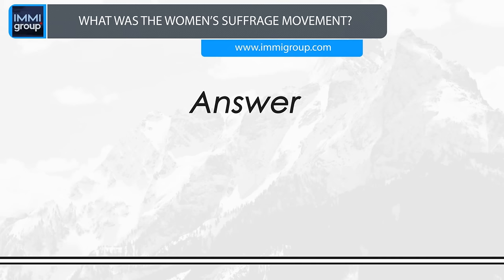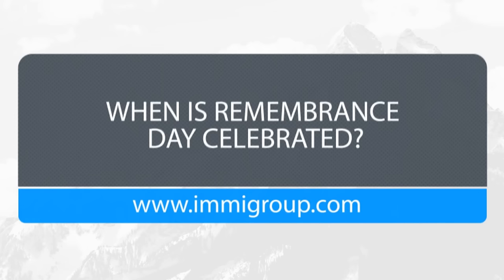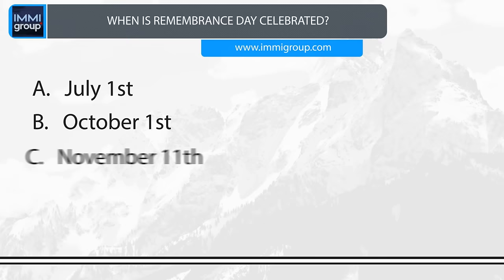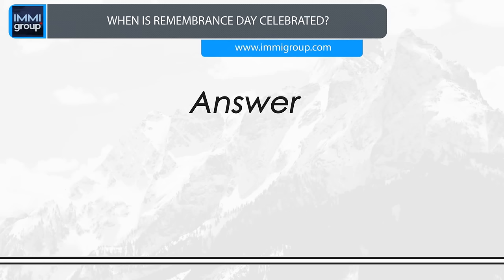When is Remembrance Day celebrated? A. July the 1st. B. October the 1st. C. November the 11th. D. December 25th. Answer: November the 11th.